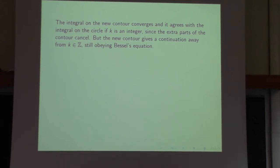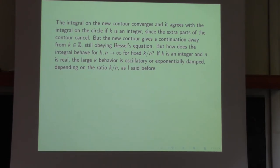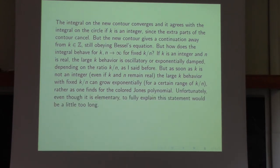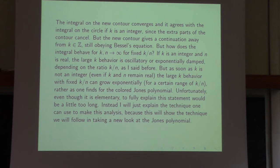Why is the integral big when k and n go to infinity with a fixed non-integer ratio? The answer is because it does the same thing in the colored Jones polynomial. If k is an integer and n is real, the large-k behavior is oscillatory or exponentially dense depending on the ratio. But as soon as k is not an integer, the large-k behavior can grow exponentially, just as for the colored Jones polynomial. Rather than giving the proofs, I'll explain the technique used to make the analysis, which will also be followed in taking a new look at the Jones polynomial.